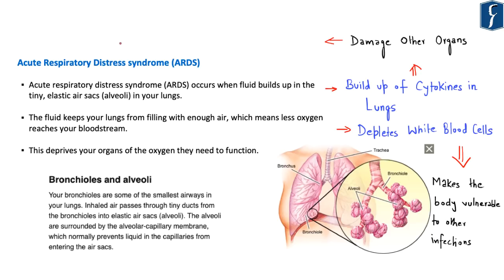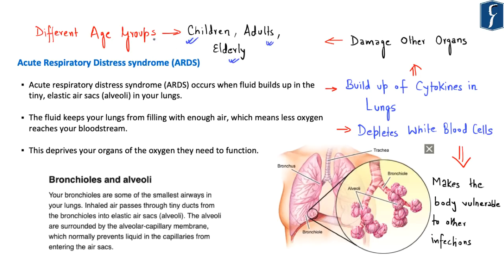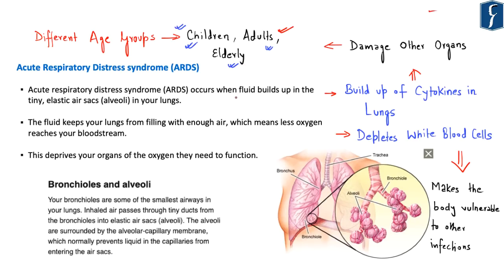The article discusses the ability of different age groups to cope with coronavirus — children, adults and the elderly. Elderly people already suffer from cardiovascular and other ailments, and their immune systems are comparatively weaker. It is still unknown why children cope better with COVID-19 compared to elderly or adults. The degree of infection depends on cytokine build-up in the lungs, referred to as Acute Respiratory Distress Syndrome (ARDS), which occurs when fluid builds up in the tiny elastic air sacs called alveoli.